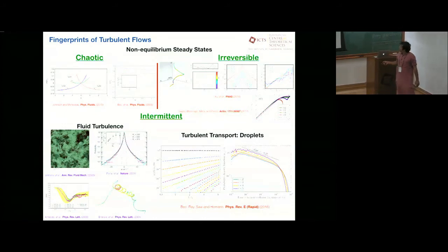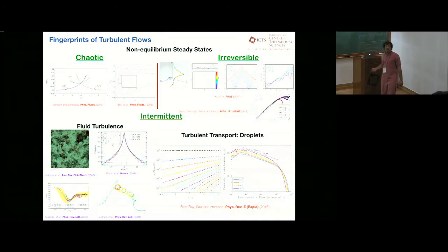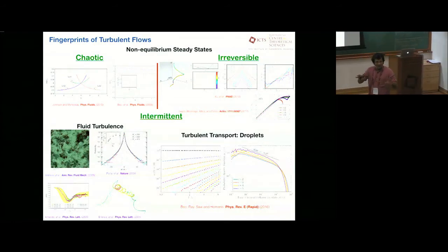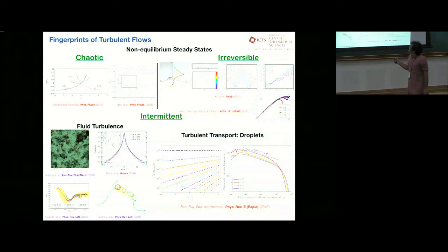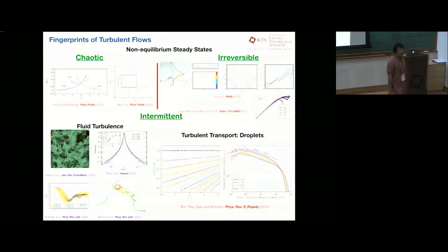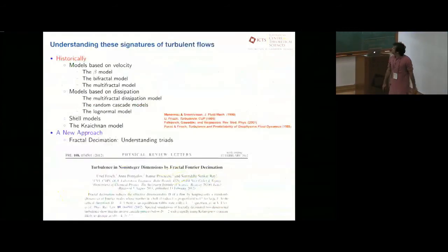If you were to measure the acceleration statistics, take a little blob of dye in a fluid and trace its acceleration as a function of time, what you end up finding is that PDF has huge fat tails. There is a reasonably finite probability that a turbulent flow will have accelerations which are many times larger than their RMS values.